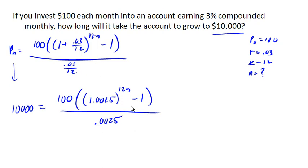Okay, so now let's start solving for n. This is a little bit tricky of a process here because there's a lot of things going on, but let's see if we can work our way through it. So the first thing we're going to do is get rid of this fraction here by multiplying both sides by .0025.